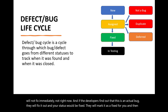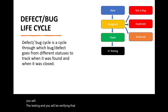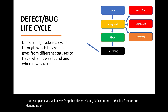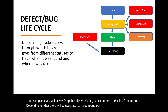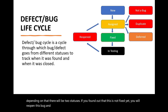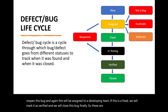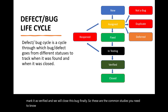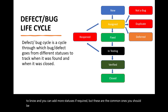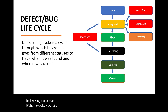Once a bug is marked as fixed, the tester picks it up and verifies whether it is actually fixed or not. If it is not fixed, the tester reopens the bug and it gets assigned back to the development team. If it is fixed, the tester marks it as 'verified' and closes the bug. These are the common statuses in the defect lifecycle — you can add more statuses as required, but these are the ones you should know.